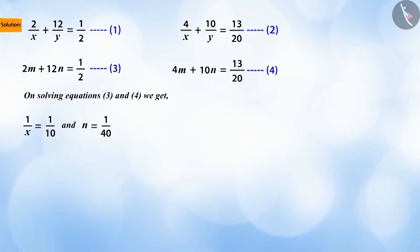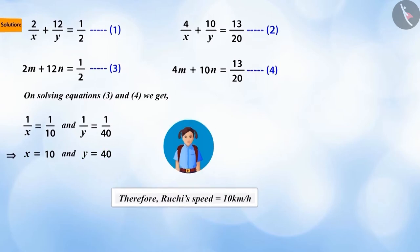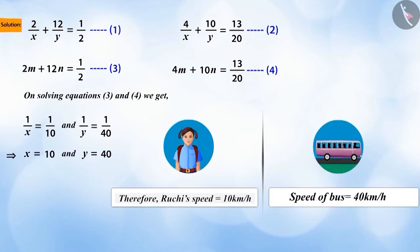Now, we know that m is equal to 1 by x and n is equal to 1 by y, so this gives us the value of x as 10 and y as 40. Hence, Ruchi's walking speed is 10 km per hour and the speed of bus is 40 km per hour.